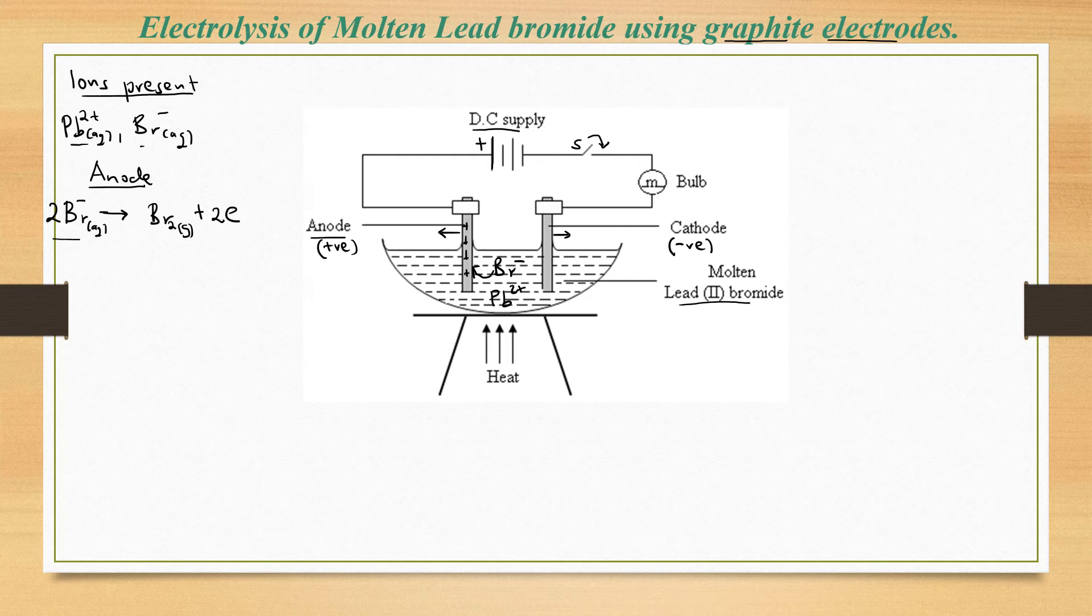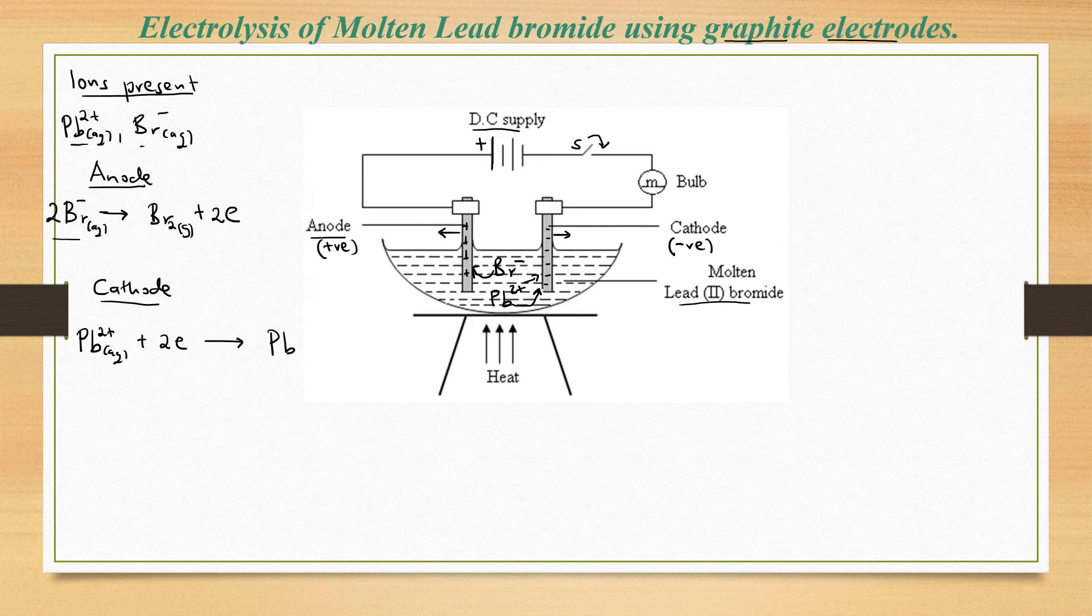At the cathode, which is a negative electrode, we shall have the positively charged lead ions migrating towards our cathode. Remember, the cathode is electron rich; it has very many electrons. Our lead ions will get discharged when they reach the cathode. They will pick two electrons from the cathode so that they form lead atoms, liquid, because the temperature is relatively high.